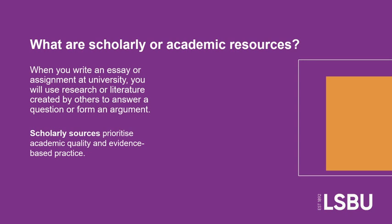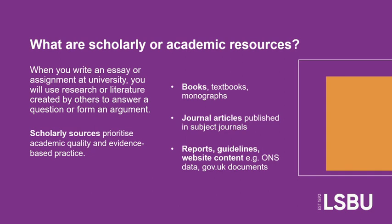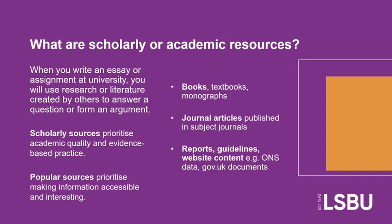Scholarly sources include the books and e-books you find in academic libraries, including LSBU's libraries, journal articles published in subject journals, and some online materials such as reports, guidelines and data — for instance, materials on the UK government website. By comparison, popular information sources prioritise making information accessible and interesting for readers, for example newspapers, social media posts and for-profit company websites.